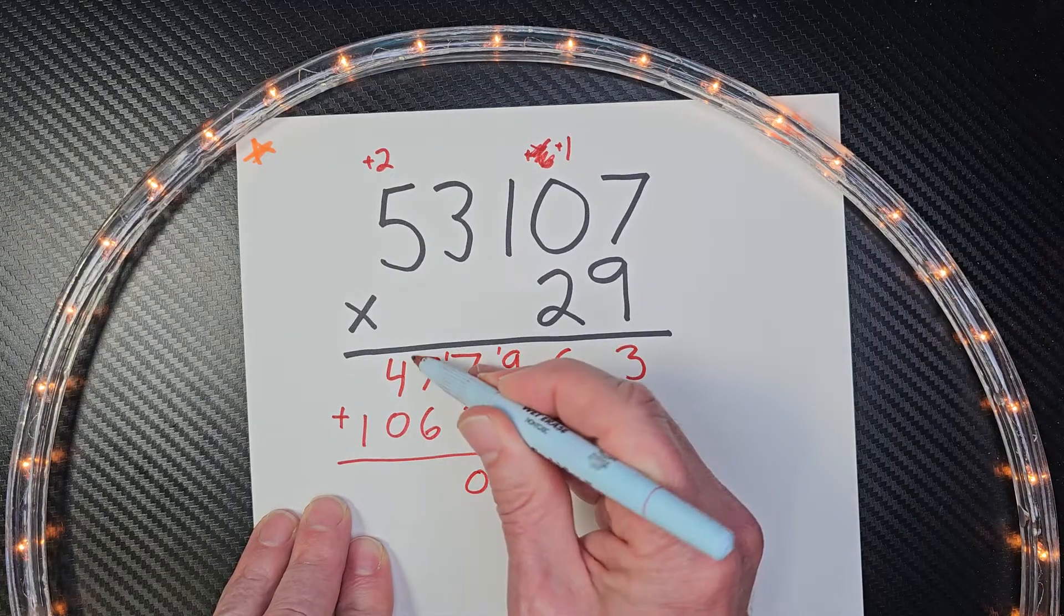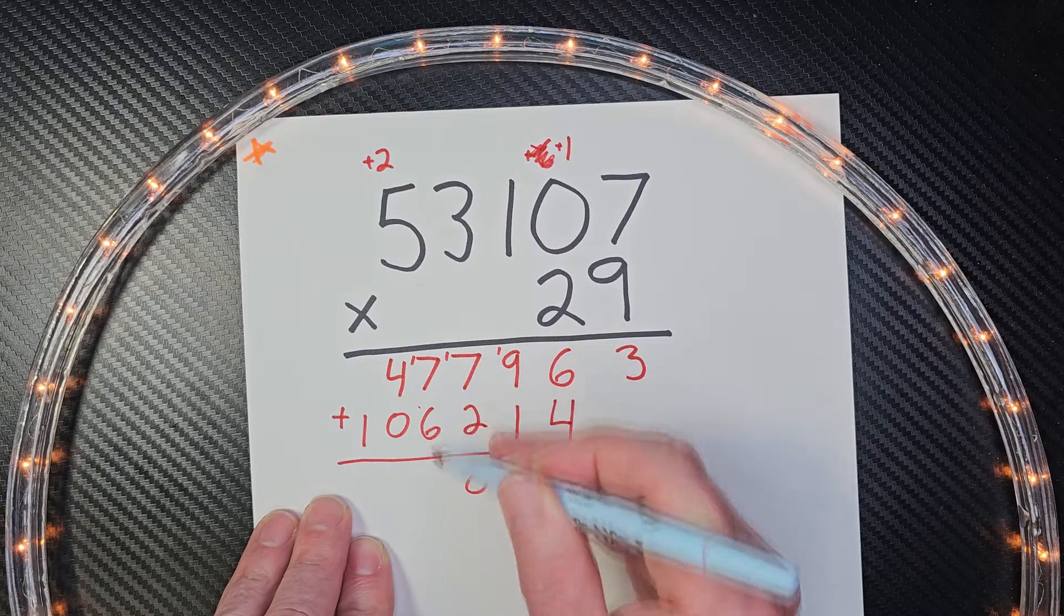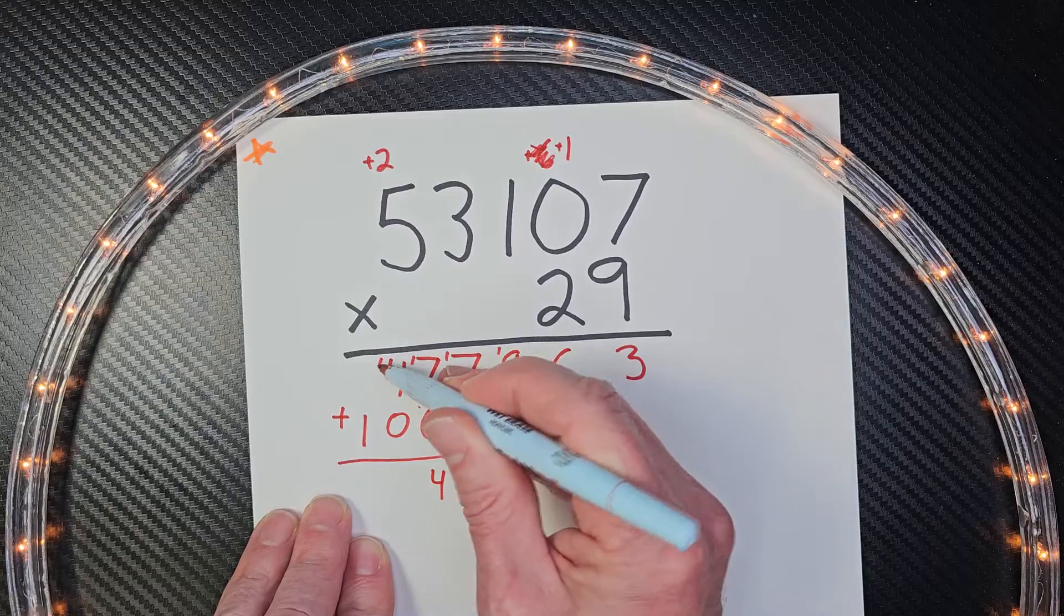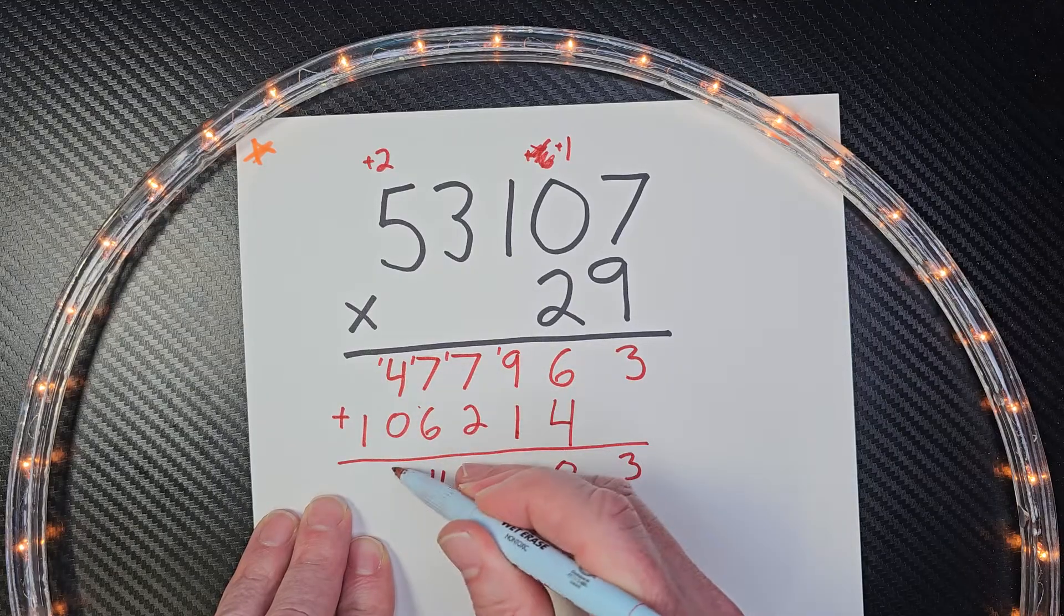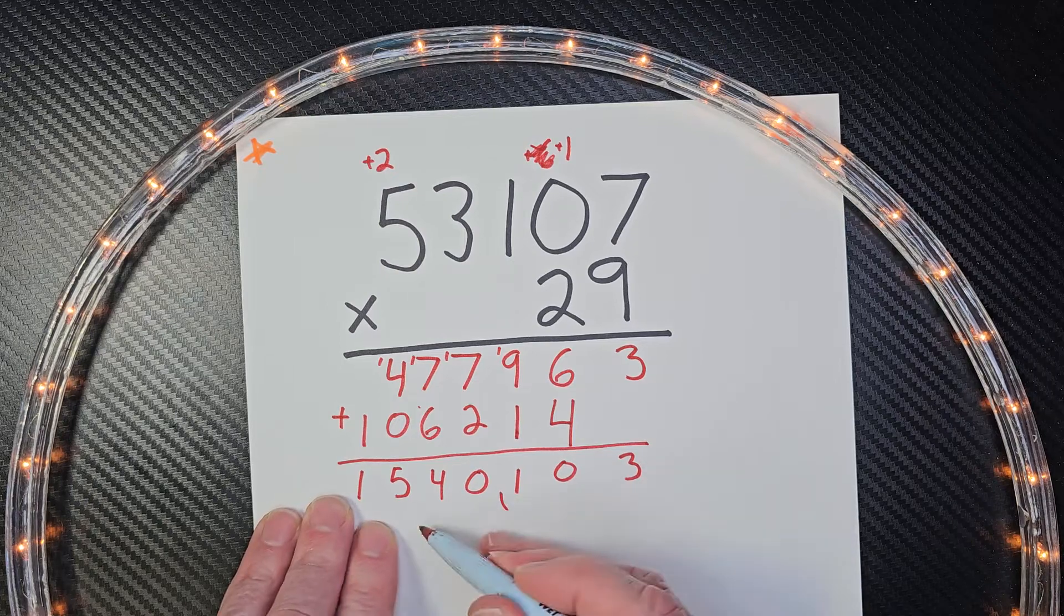Nine, ten, eleven, carry the one. Seven, eight, nine, ten, carry the one. Seven, eight. Eight plus six is fourteen. Eight, nine, ten, eleven, twelve, thirteen, fourteen. Do you see how I got that? Carry the one, and four plus one is five, and then one.